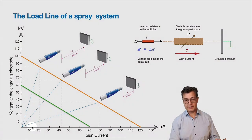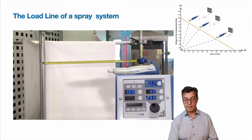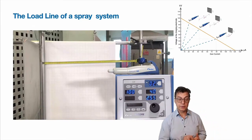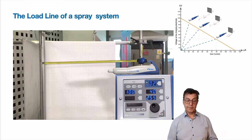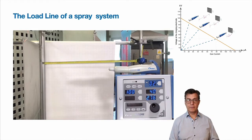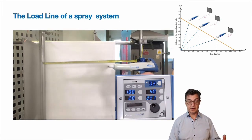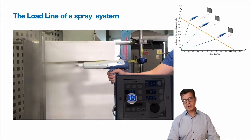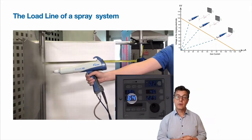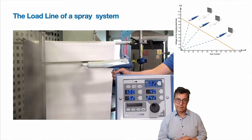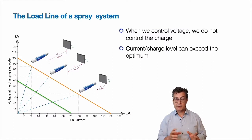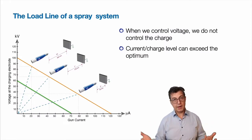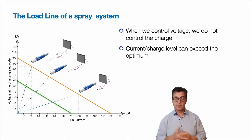To show a real-life example, here is a controller set to voltage control with 100 KV maximum setting. As the gun moves closer to the product, you will see the current go much higher, reaching over 90 µA when the gun is very close to the product — reaching the level at which the development of back-ionization is guaranteed. When we control voltage, we do not control the charge. The charge is current. The current level can exceed the optimum if we allow it to change uncontrollably based on changes in the gun-to-part distance.